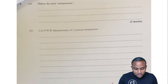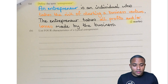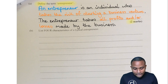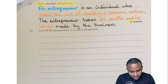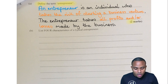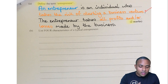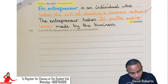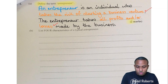Question two, part a: define the term entrepreneur for two marks. The entrepreneur is an individual who takes the risk of starting a business venture. This is only one mark. To get the second mark, you have to add a next point: the entrepreneur takes all profits and all the losses made by the business. That's how we get our two marks for the definition of entrepreneur.